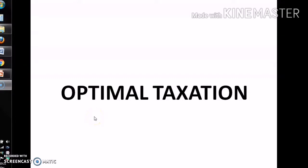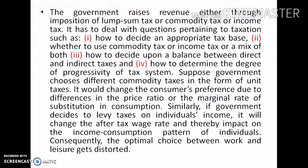Let us discuss optimal taxation. There is a fundamental normative question in the theory of taxation: what are the best taxes to levy in order to raise a certain amount of revenue? This question leads to the criteria of determining optimal taxation. The government raises revenue through lump sum tax, commodity tax, or income tax, and must address questions such as how to decide an appropriate tax base, whether to use commodity tax or income tax or a mix of both, how to balance direct and indirect tax, and how to determine the degree of progressivity of the tax system.